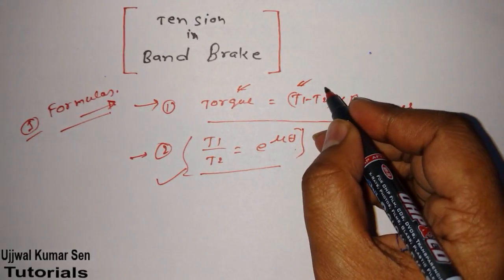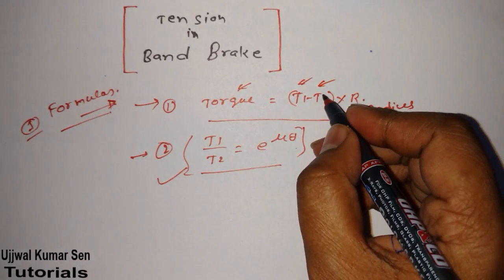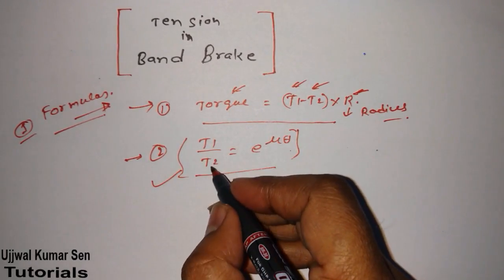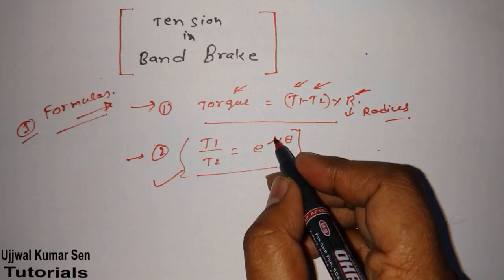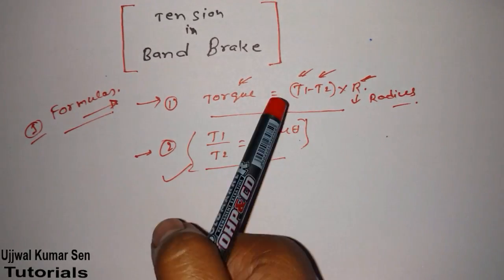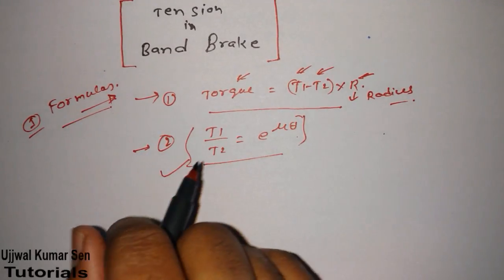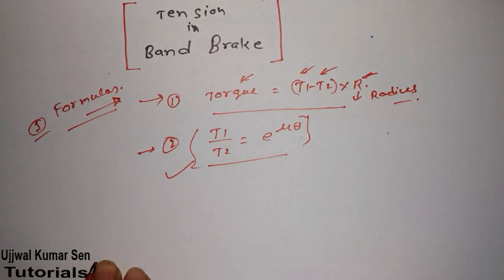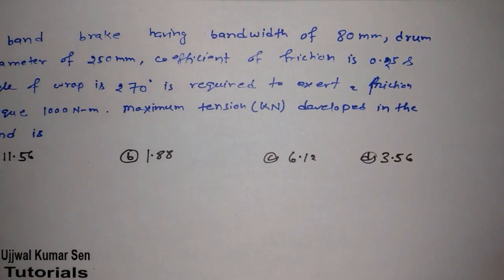Because based on this formula, they have asked question in GATE previous year. So let me share with you what is basically. This is torque. This T1 is tension in the tight side. This T2 is tension on the slack side. And R is radius. So here also the same T1, T2. Mu is coefficient of friction. And theta is angle. These are all things about this band brake.